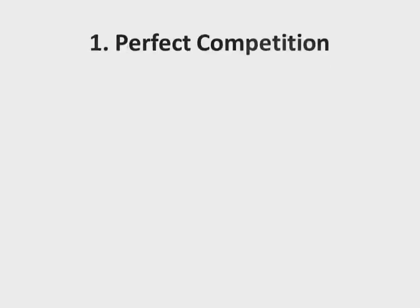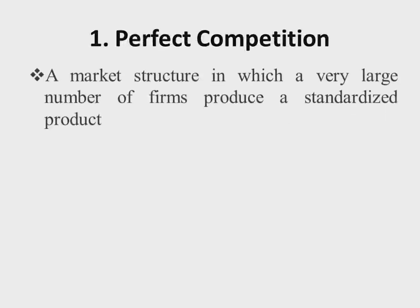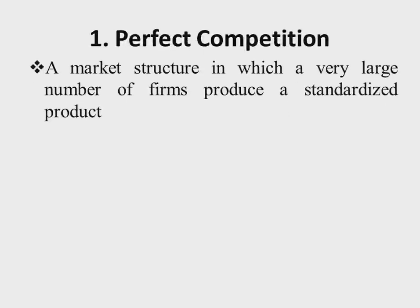So let's now look at perfect competition. A market structure is said to be perfectly competitive if there is a very large number of firms producing a standardized product — in other words, selling homogeneous products. Let's look at the features of a perfectly competitive market. Number one is that we have a large number of buyers and sellers in the market.